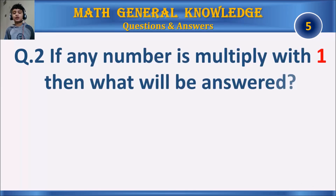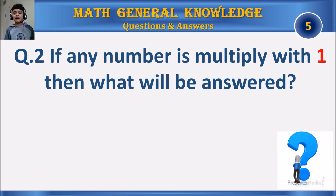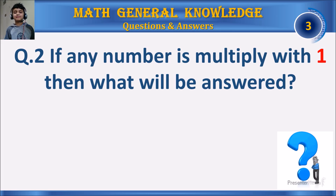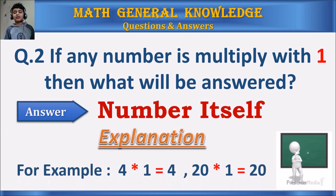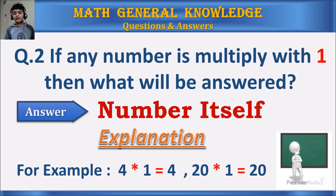Question 2: If any number is multiplied with 1, then what will be the answer? Your time starts. The answer is the number itself. For example, 4 times 1 equals 4, 20 times 1 equals 20, and so on.